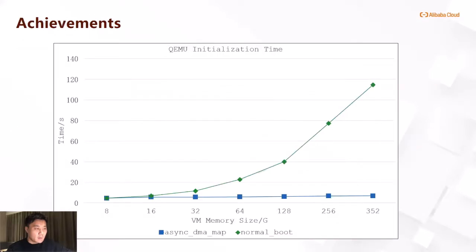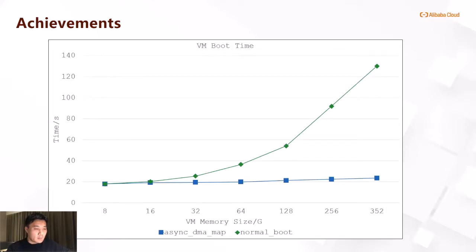Let's see the achievements of this practice. The test results are based on an initialized balloon size of 8 gigabytes. QEMU initialization time is still around 7 seconds even when the guest has more than 300 gigabytes of system memory, and the create VM command returns very quickly. The guest boot time has not increased along with memory size growth — boot time stays around 20 seconds even when system memory exceeds 300 gigabytes. These results show that this practice can significantly speed up the boot time for guests. That's it. Thank you.